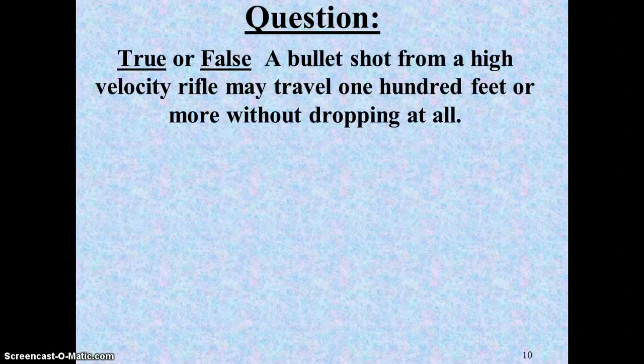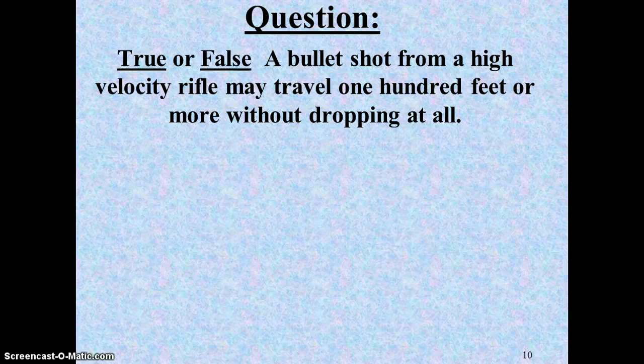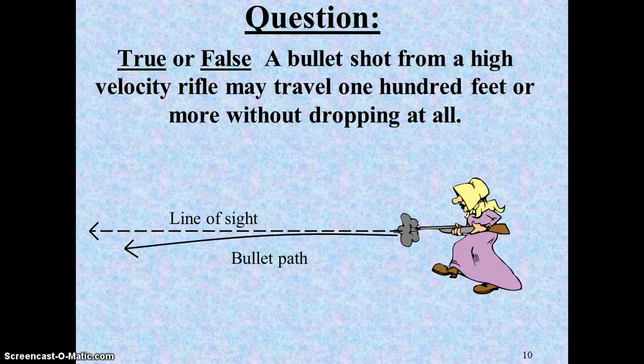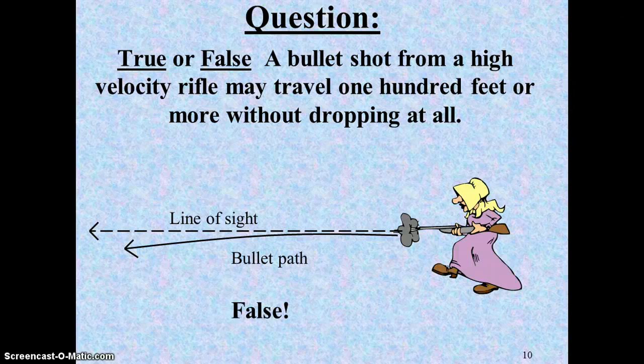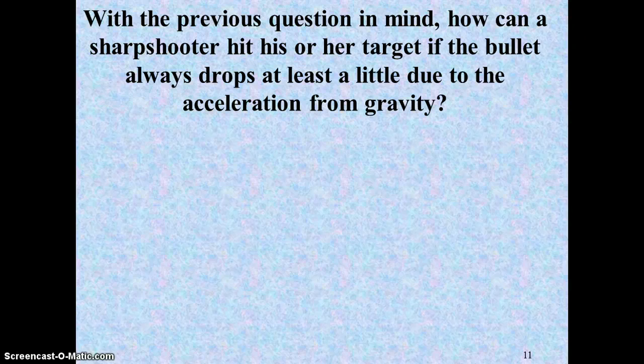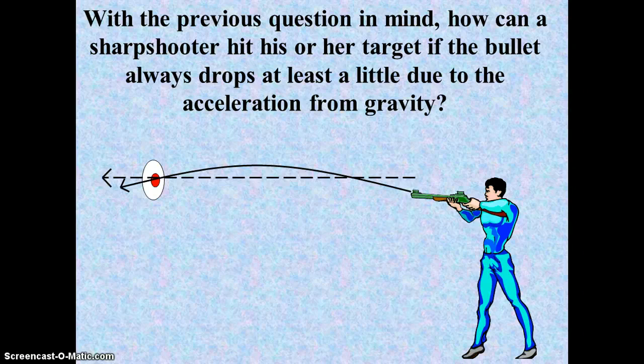Another kind of thought question here. A bullet shot from a high-velocity rifle can travel 100 feet without dropping at all. The answer to that would be false, because the moment a bullet comes out of the gun, it will start to curl below the line of sight because gravity isn't delayed. Gravity starts to act on the bullet immediately as it's released. So if you ever want to hit a target, and you're always going to drop a little bit due to gravity, you're always going to have to aim a little bit higher than your target to compensate for gravity.